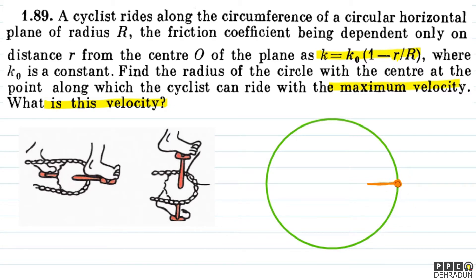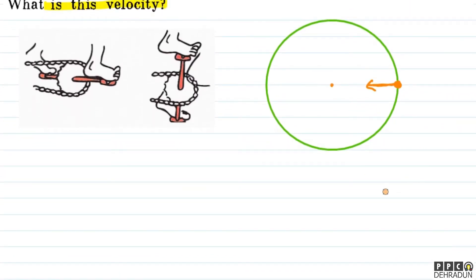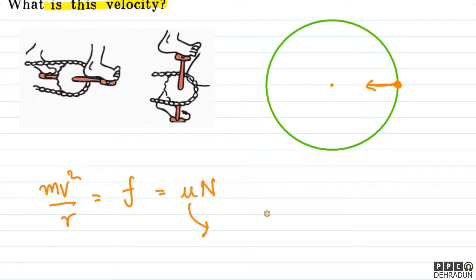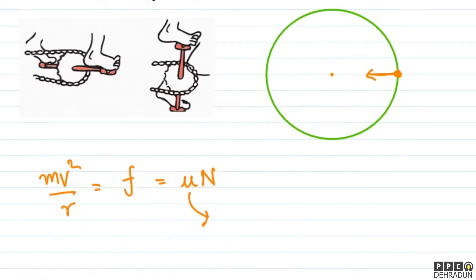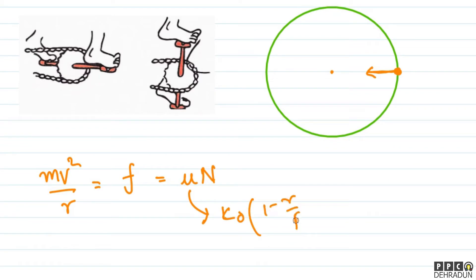The centripetal force towards the center — who can provide that? Only friction, because when the cyclist is on the ground, only friction can provide force in the horizontal direction. So we can write mv²/r equals friction, which is μN, and μ equals k = k₀(1 - r/R), and normal force N equals mg.